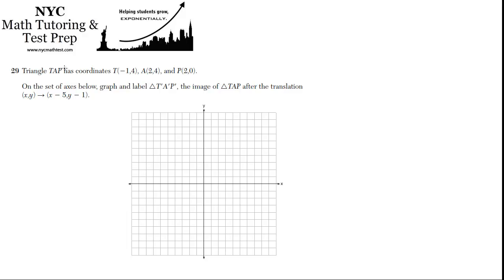Triangle TAP has coordinates as shown on the set of axes below. Graph and label TAP prime, the image of TAP after the translation where we are going to go 5 to the left and 1 unit down. Right, so that's the instructions for the translation.